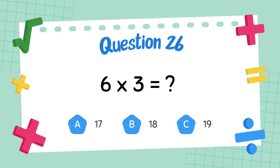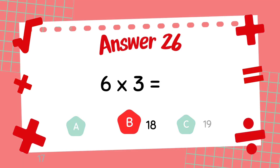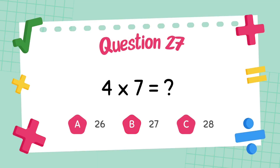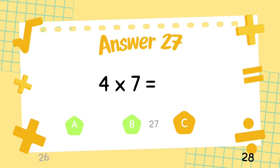What is 6 multiply 3? The answer is 18. What is 4 multiply 7? The answer is 28.